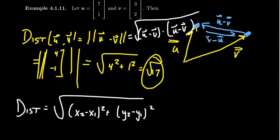So actually, the usual distance formula, sometimes called the Euclidean distance formula, is really just the manifestation in two dimensions of this more general formula of distance: the length of the difference of two vectors.